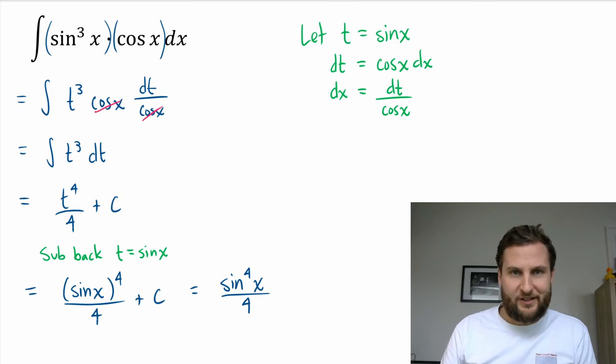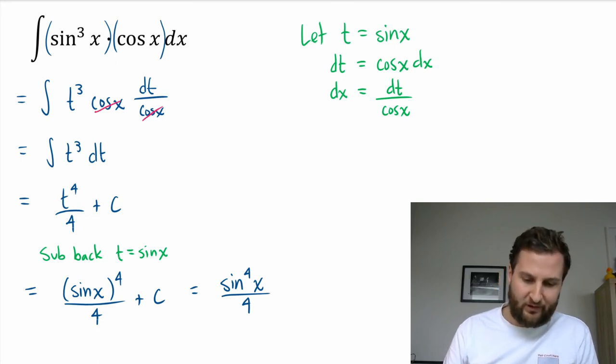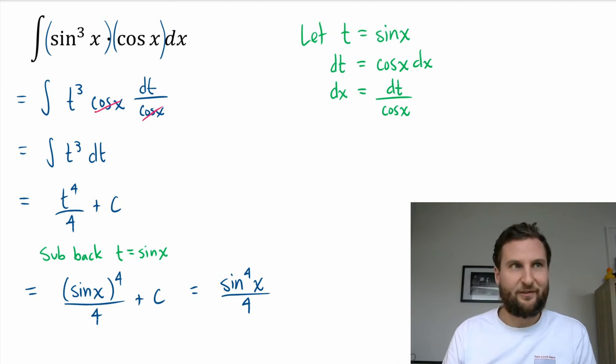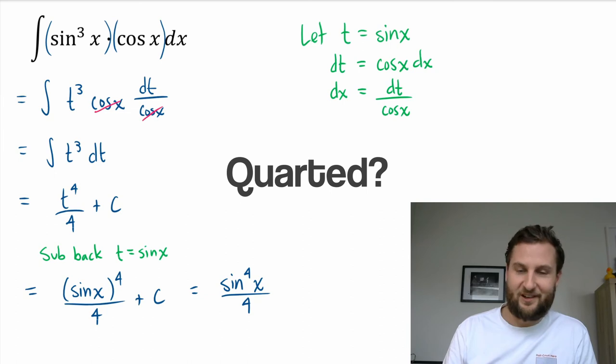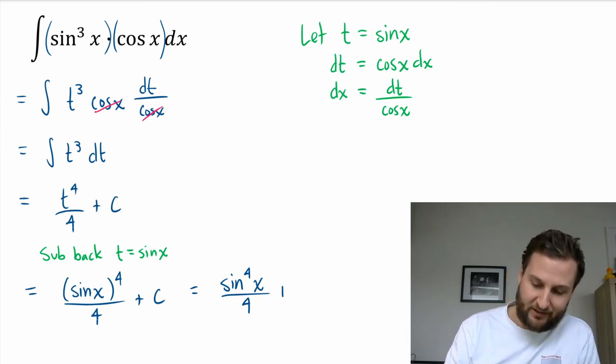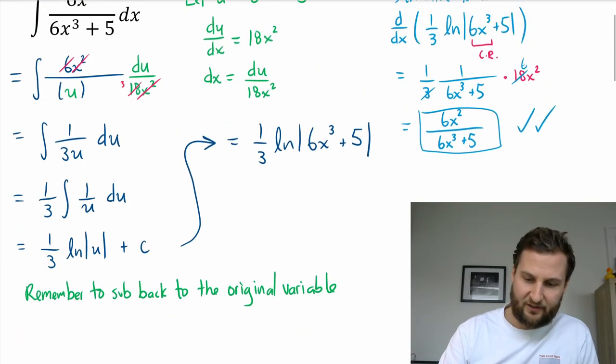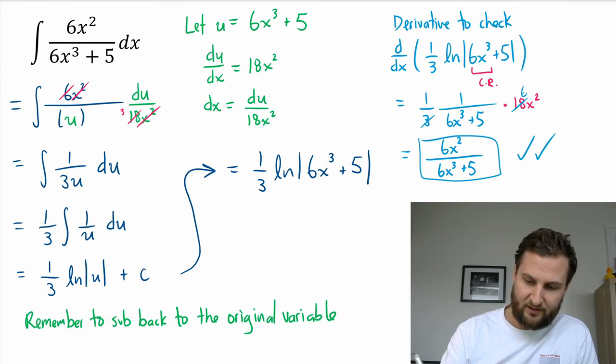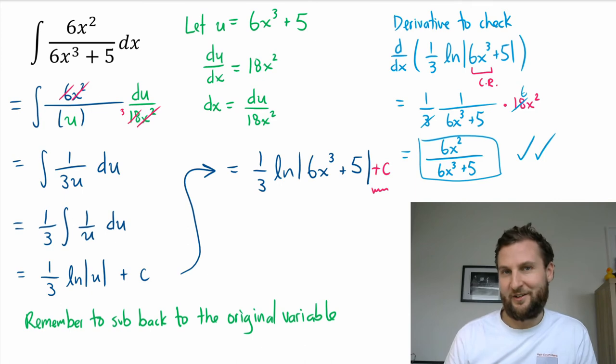A standard power rule for the integral: I will get t to the power 4 divided by 4. When I sub that back in for t equals sine x, I get sine to the power 4 of x divided by 4. Don't forget your plus C. Speaking of plus C, on the very last question I think I left out a plus C after my substitution. Very easy to do, leaving out that plus C.